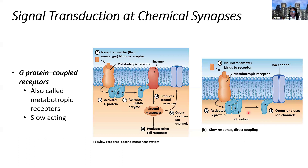In the second example of metabotropic receptors, there are less steps in the way — no second messenger — but the receptor is still different from the channel. So when the neurotransmitter binds, the G protein has the alpha subunit that moves off, and that is directly coupled to a channel, and then we can have ionic movement and see a cellular response. But in both of these mechanisms, there is a slower response because there are steps involved and the receptor and the channel are different.